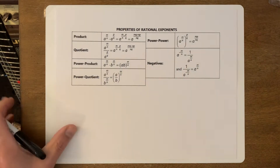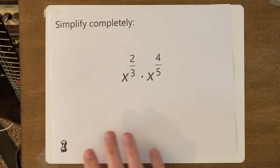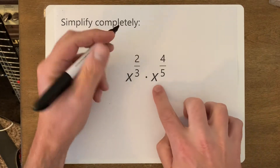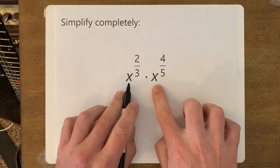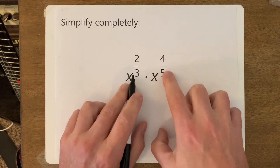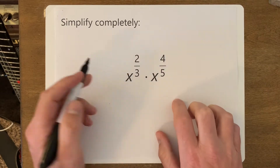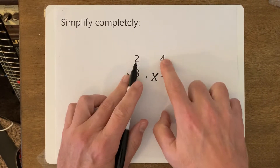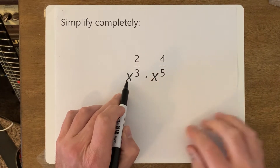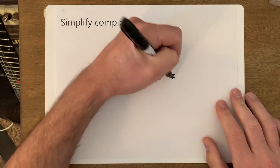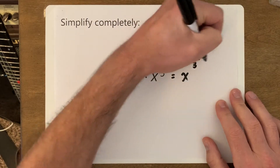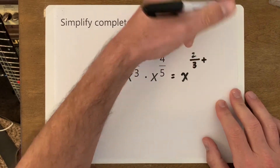I've picked out some examples for you to see. Here's our first one: we have two bases x and x with different exponents — two-thirds and four-fifths. Our first job is to add these two fractions together because we have the two bases side by side, so we want x to the two-thirds plus four-fifths.